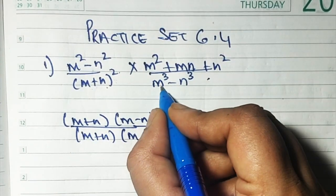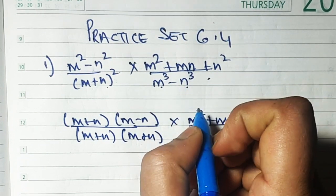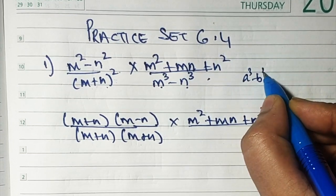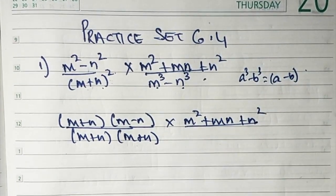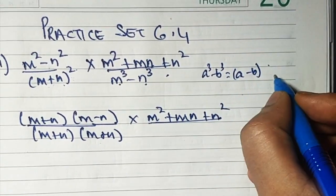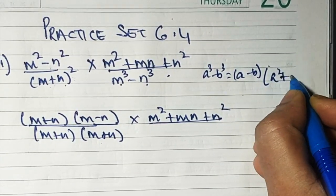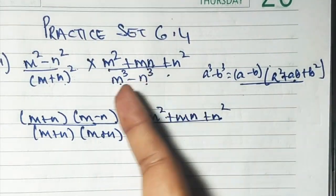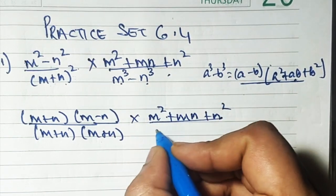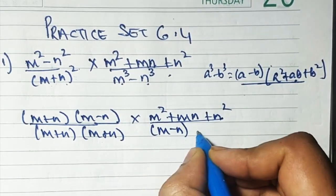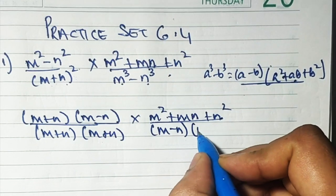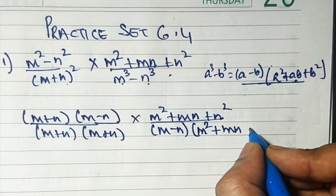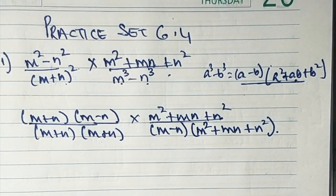Now for m³ - n³, recall the a³ - b³ formula: (a - b)(a² + ab + b²). So m³ - n³ is going to be (m - n)(m² + mn + n²).